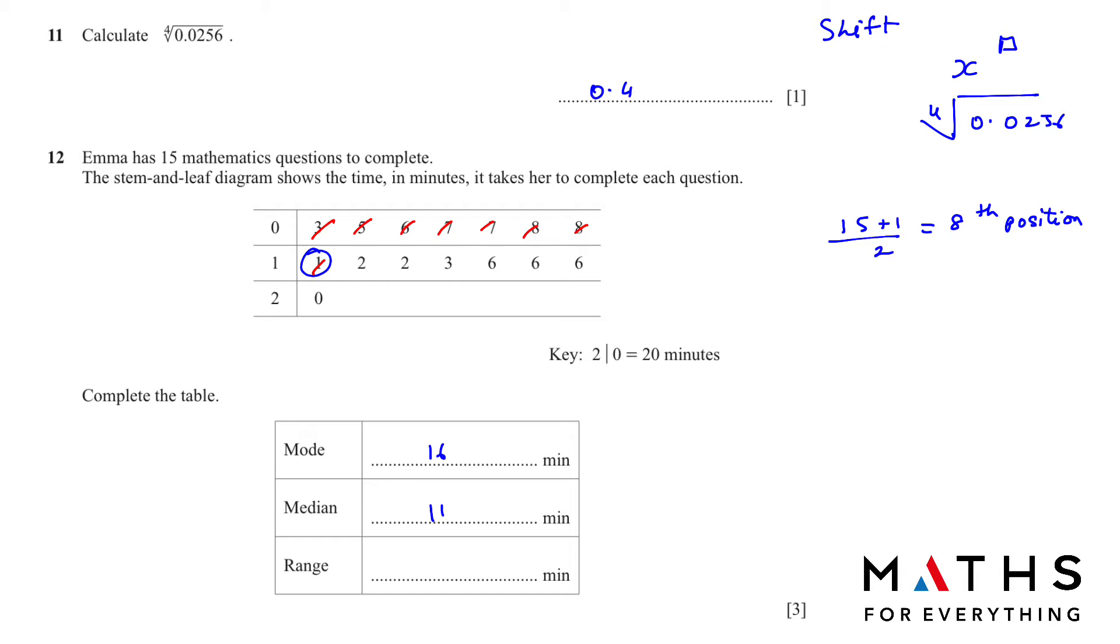If it is an even number, your total is even, then you will have to take the next one and add both of them together and divide by 2. For the range, we take the highest value, which is 20, and from that subtract the lowest value, which is 03 or 3. That will give us 17. 17 is our range.